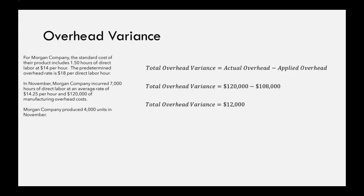But that's just half of the answer — a variance has to either be favorable or unfavorable. Our applied overhead was $108,000, meaning we expected to spend $108,000 on overhead for November, but we actually spent $120,000. Since we spent more than expected, that makes this overhead variance unfavorable.